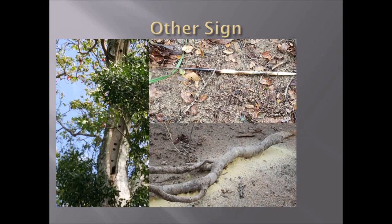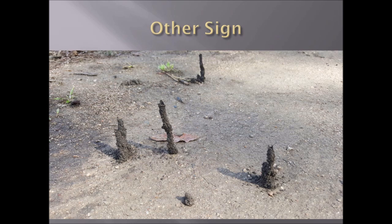Here are some examples of other sign: a porcupine quill on the top right; frass or sawdust from wood-borer beetles boring into a marula log; and holes that might be exit holes for wood-borer beetles, or holes excavated by woodpeckers or barbets used as nesting holes. Here we also have launching platforms for alates or winged termites, which during the rains come out and go on their mating flight launching from these towers.